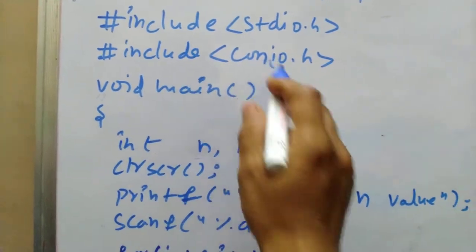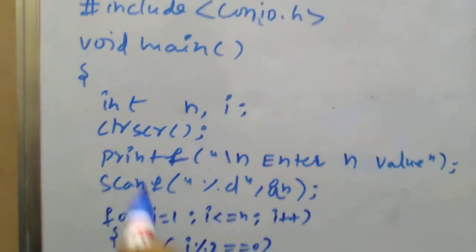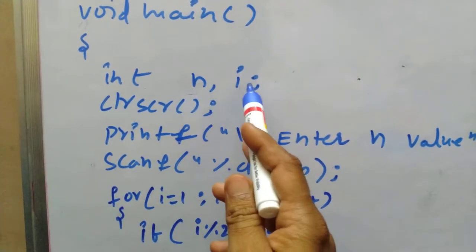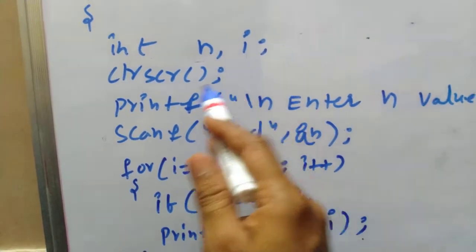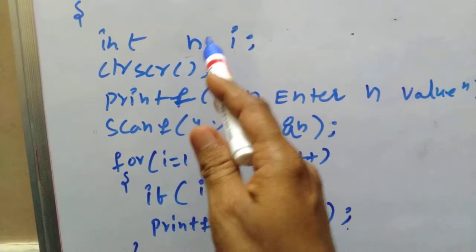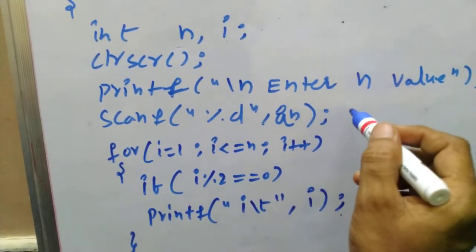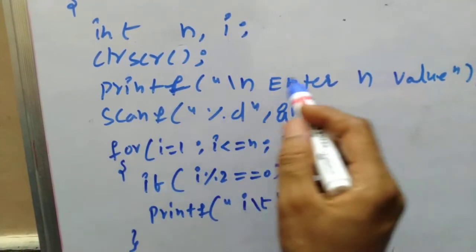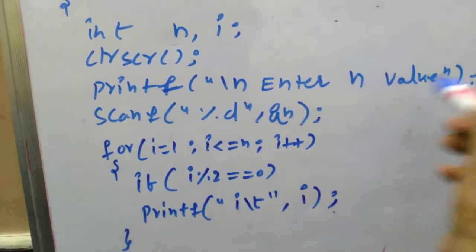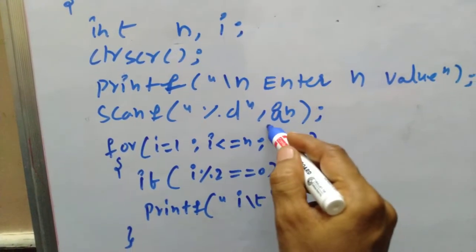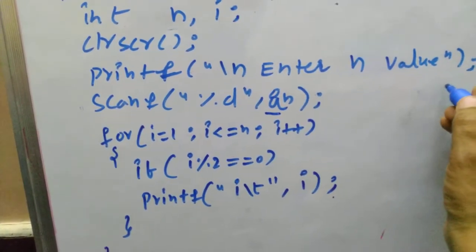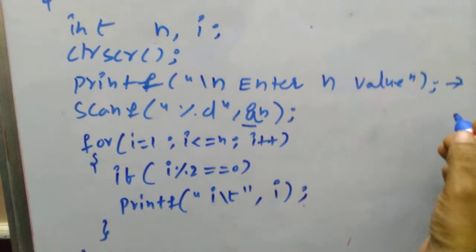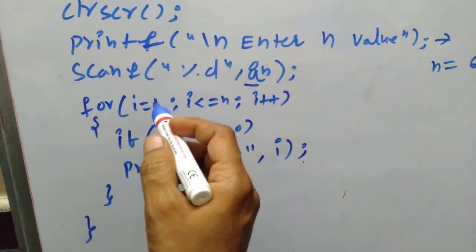First I include stdio.h and conio.h headers. I declare two integer variables n and i. clrscr() clears the output screen. For a given range of numbers I need input from the keyboard, so I write printf to display 'enter n value', then scanf reads the value of n. For example, I take n as 6, so when the program runs, n becomes 6.